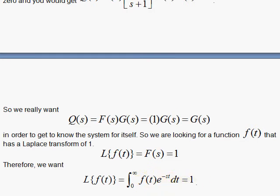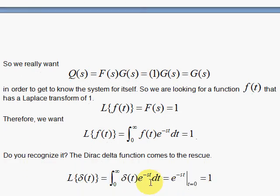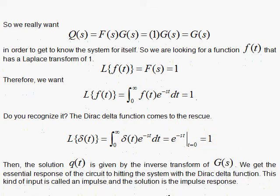Here's the Laplace transform definition. What f(t) gives 1? Do you see it? It's the Dirac delta function. The Dirac delta function δ(t) sifts out the function evaluated where t equals zero. Here you have, at t=0, e^0 which is 1. So the Dirac delta function does the job.